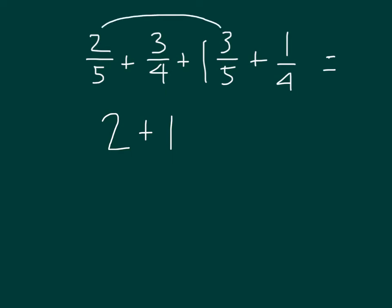So again, it was 2 fifths with the 1 and 3 fifths giving us 2, and 3 fourths with the 1 fourth giving us 1, and 2 plus 1 is 3. So for this multi-term addition problem, we have this equaling 3.